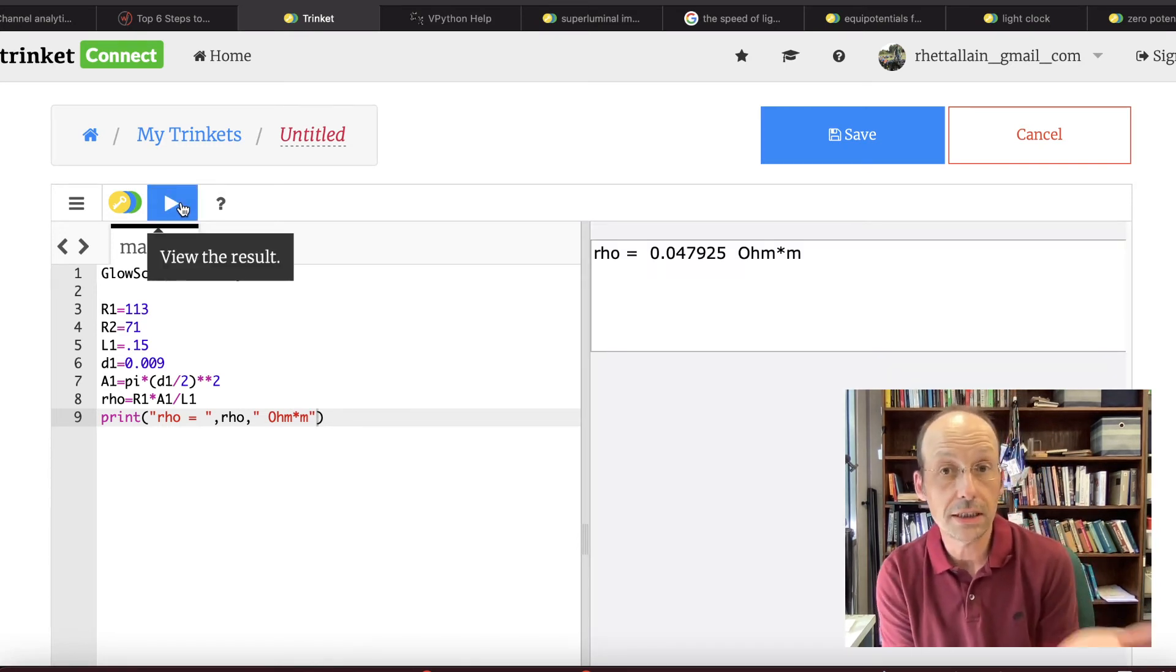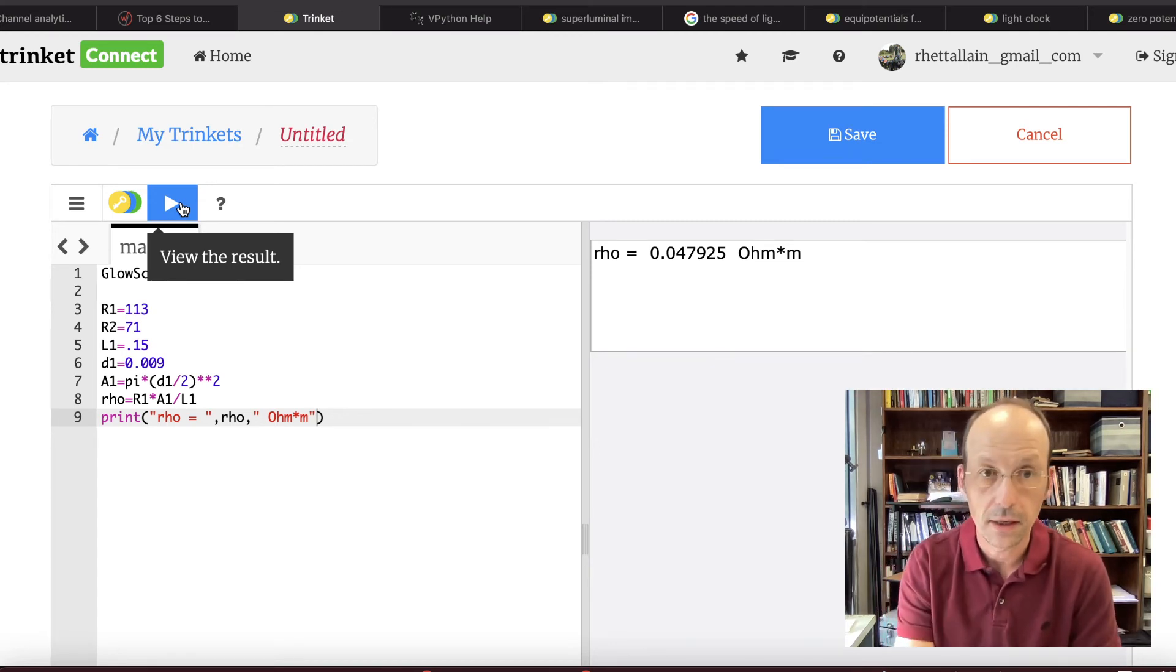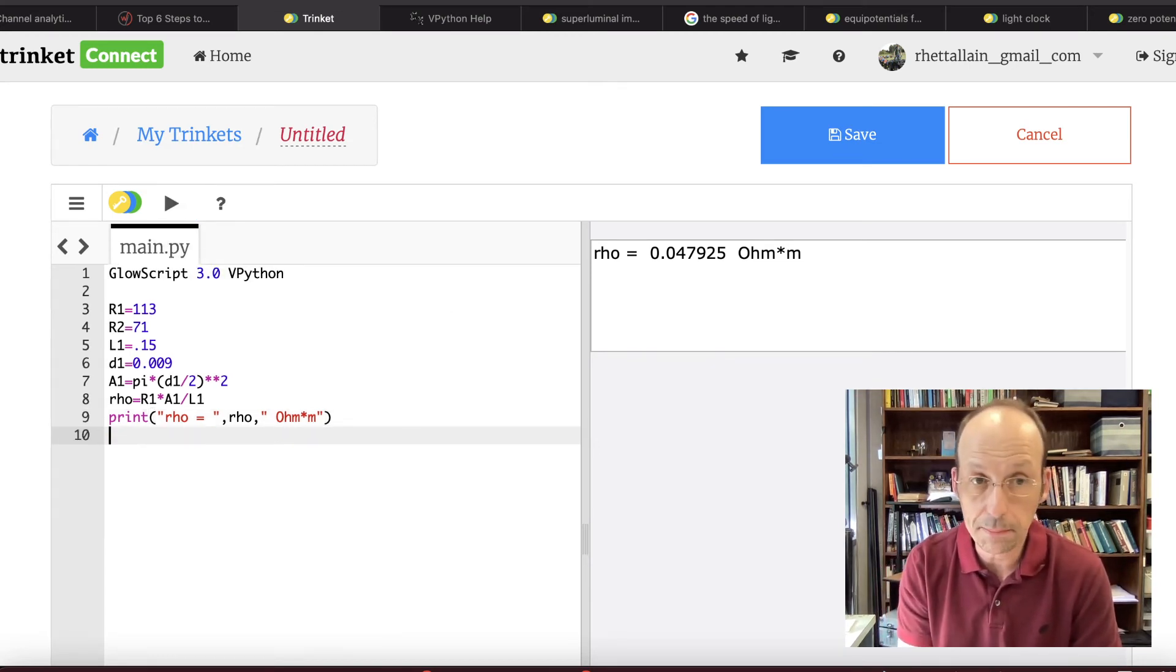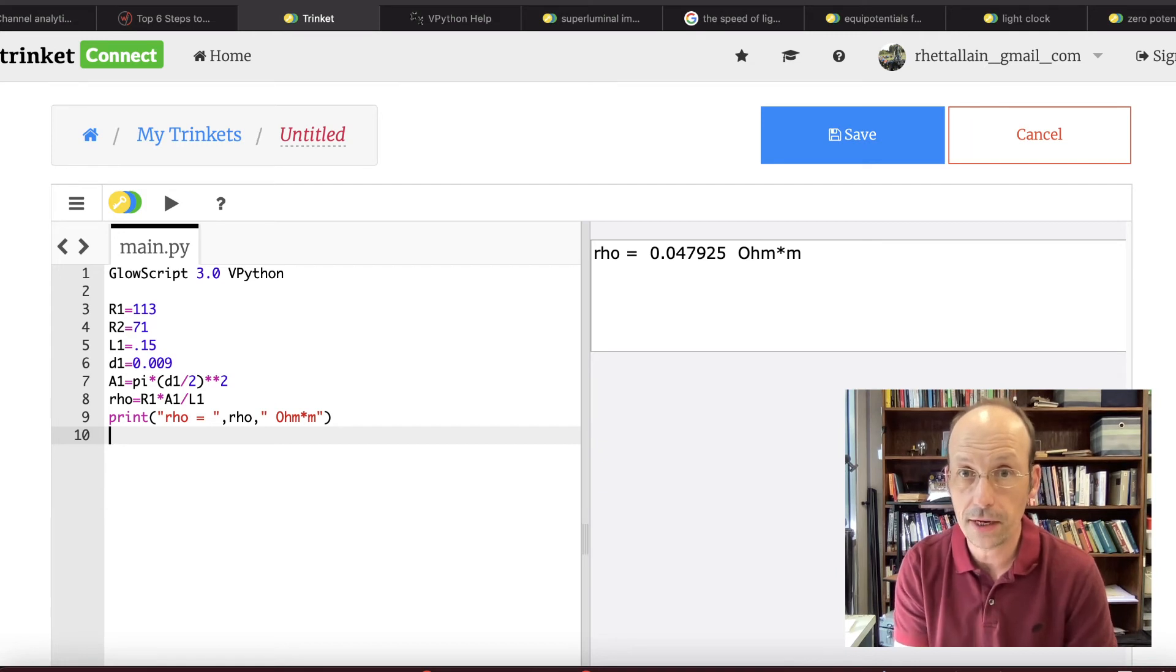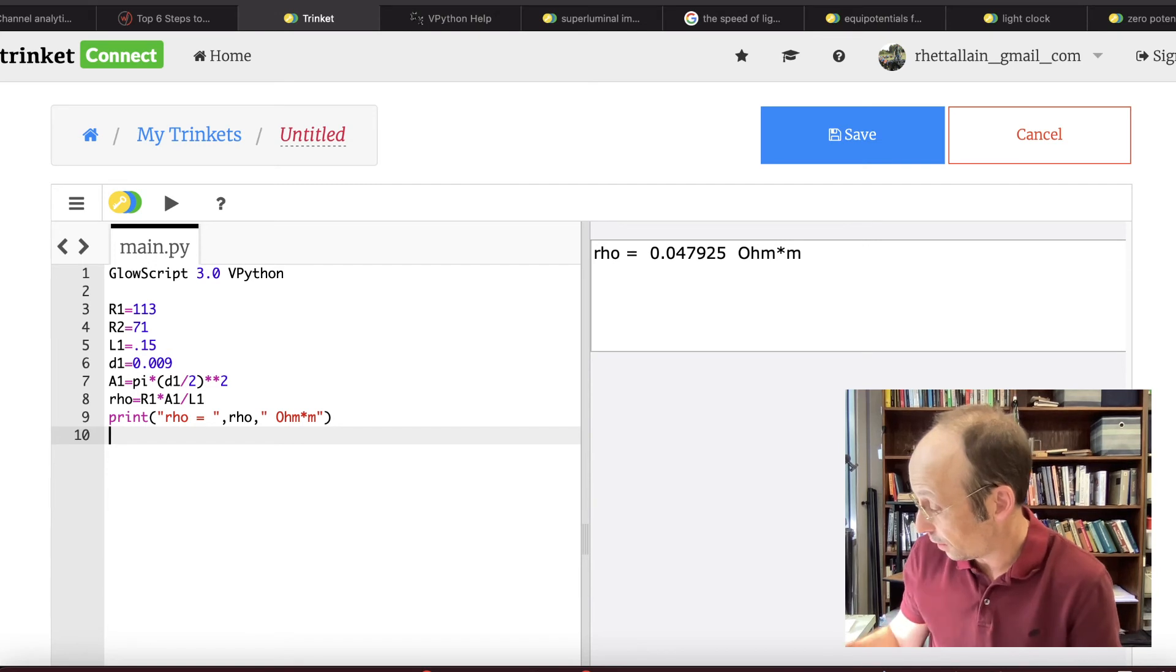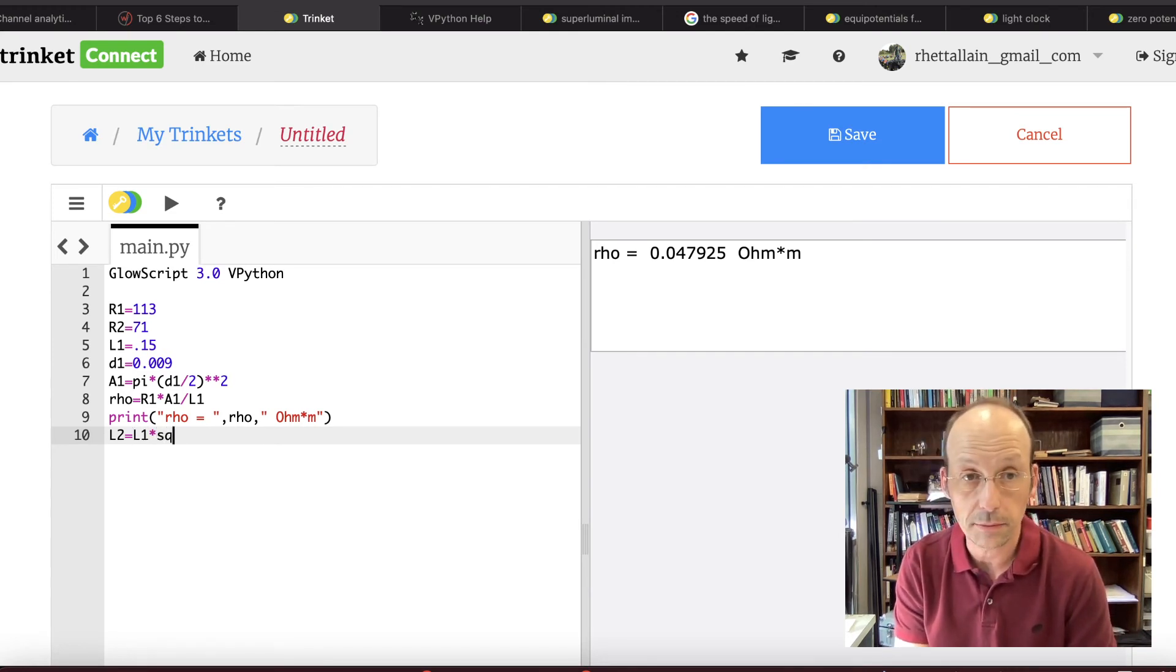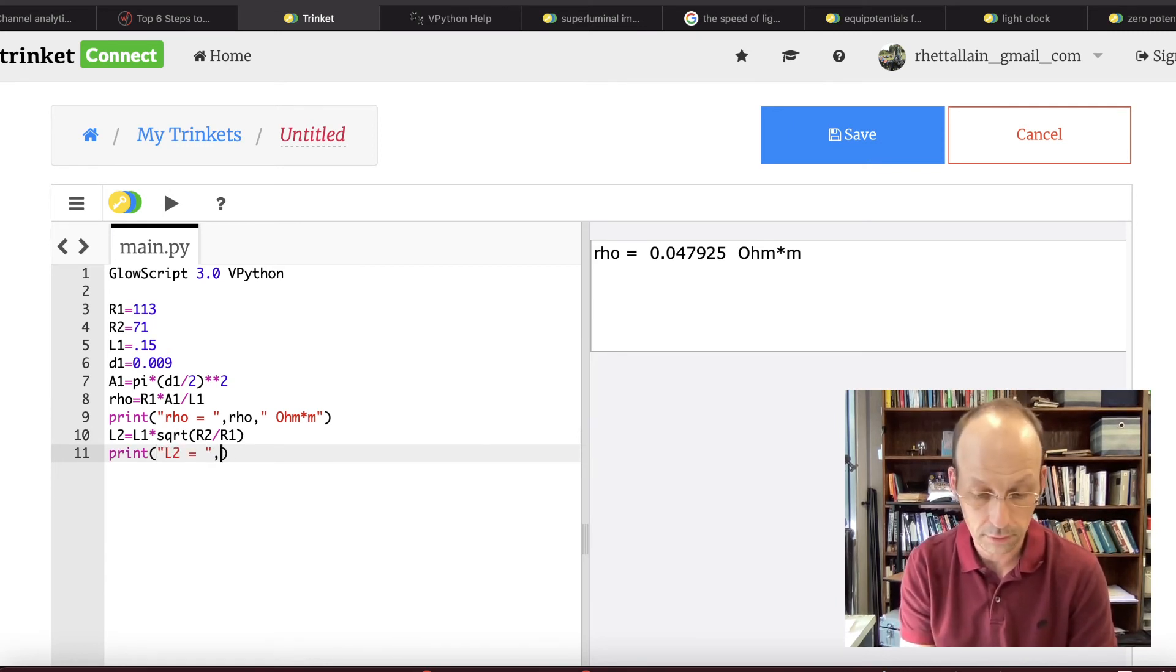So there's my resistivity. Now I picked a value for A1 and I picked a value for L1. So let's go ahead and calculate L2. So let's say L2 is equal to L1 times the square root of R2 divided by R1 and print that out. L2 equals L2 meters.